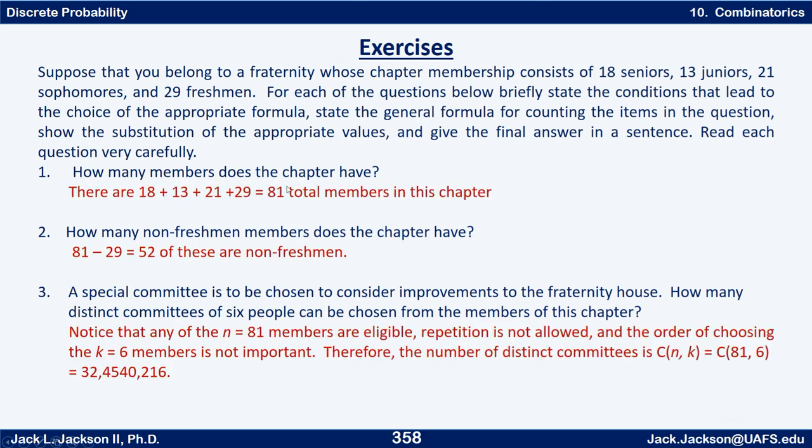Well, to get the total members you just have to add these up: 18 plus 13 plus 21 plus 29, that's 81 total members in the chapter. How many of them are not freshmen? Well, it would be 81 minus the 29, which is 52 non-freshman members. Now on number three, notice that all the 81 members are eligible. Repetition is not allowed, but the order is not important, and we're choosing six. So that's just 81 choose six. You can do that in your calculator and get this number here.